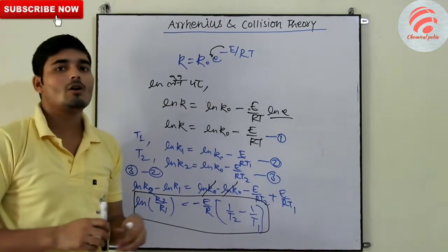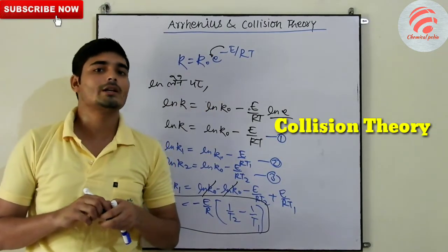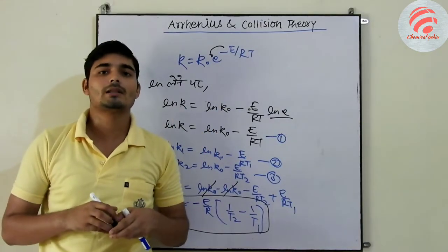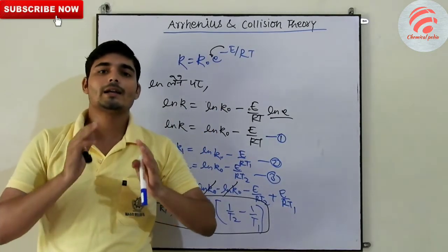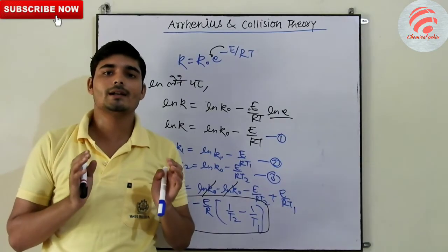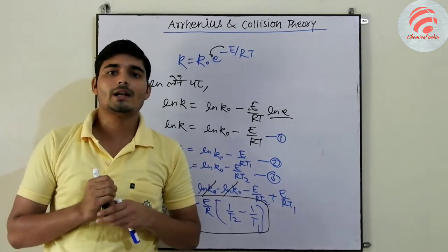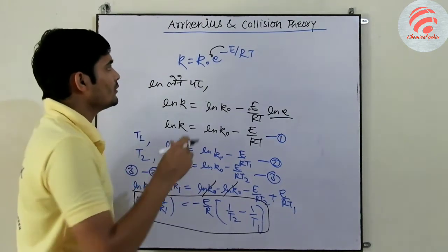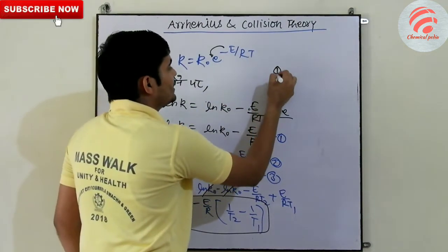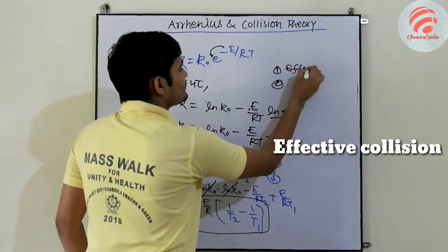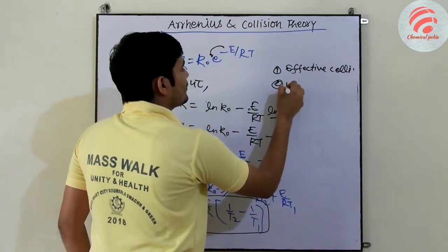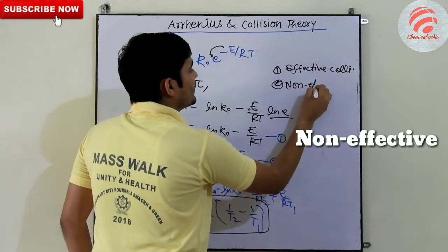Now we will talk about the collision theory. What is the collision theory? This is our rate constant which is temperature dependent, this is what we have told. The molecules, they will do the collision. But we have effective collision and the other non-effective collisions.